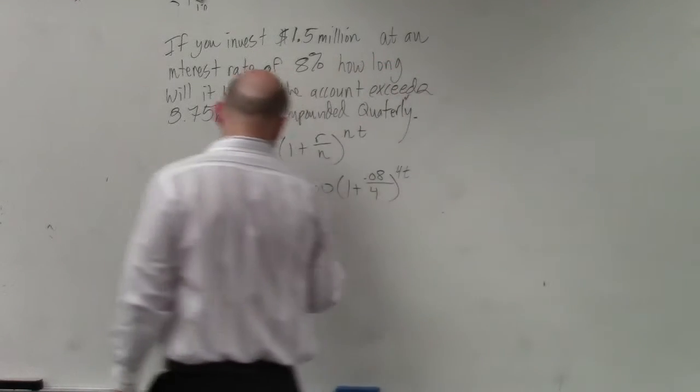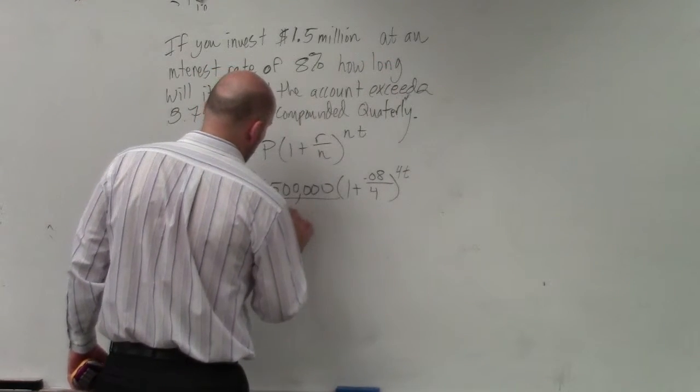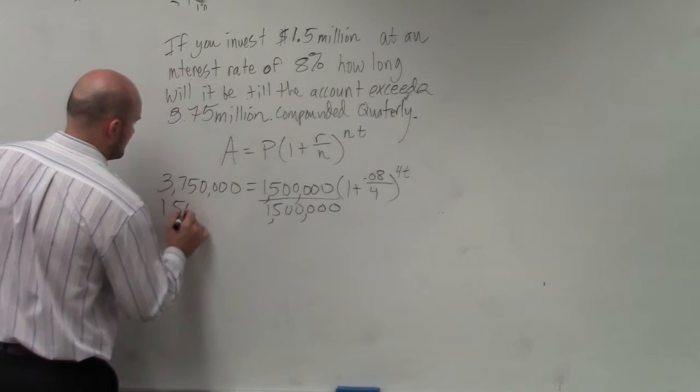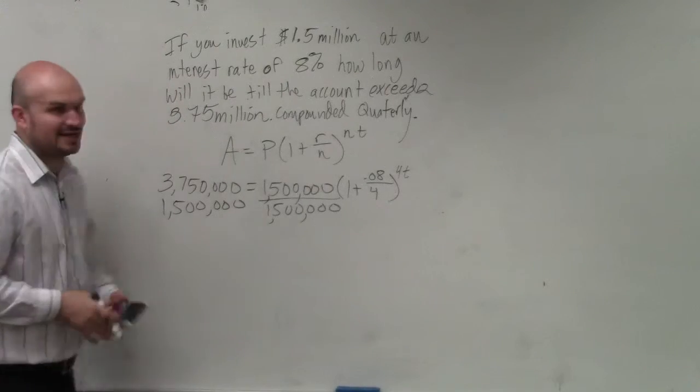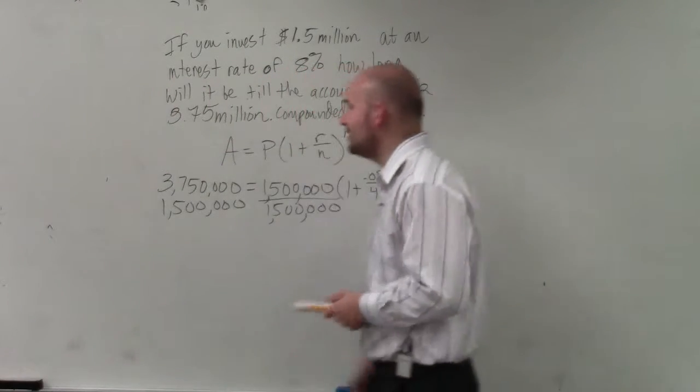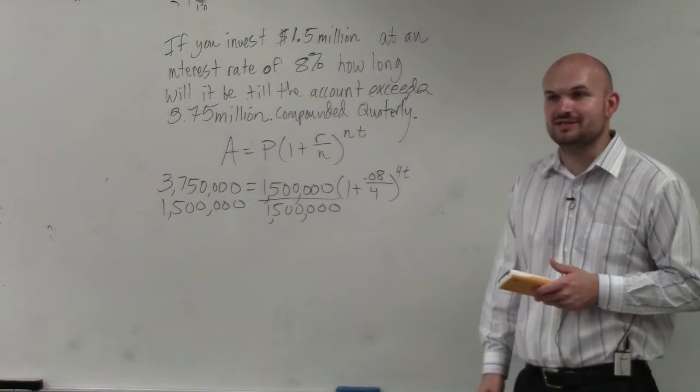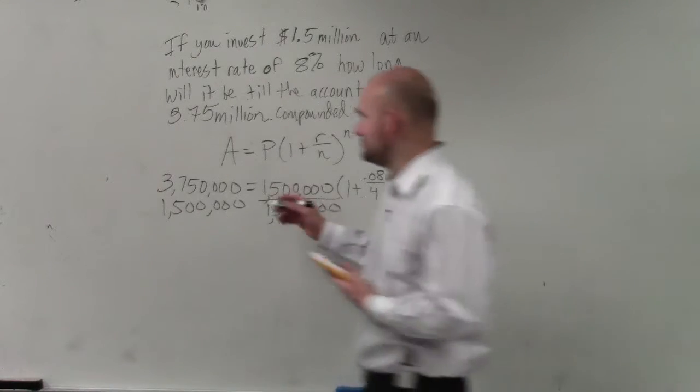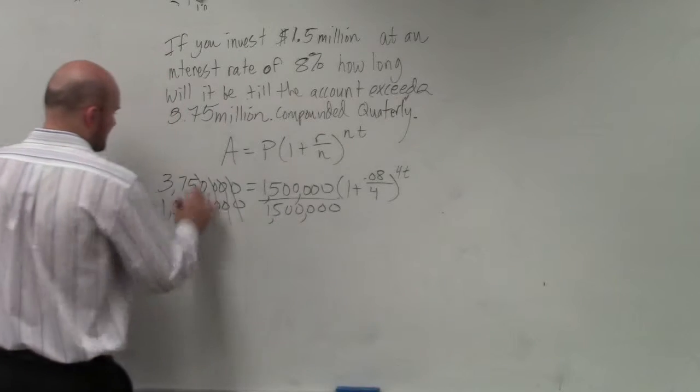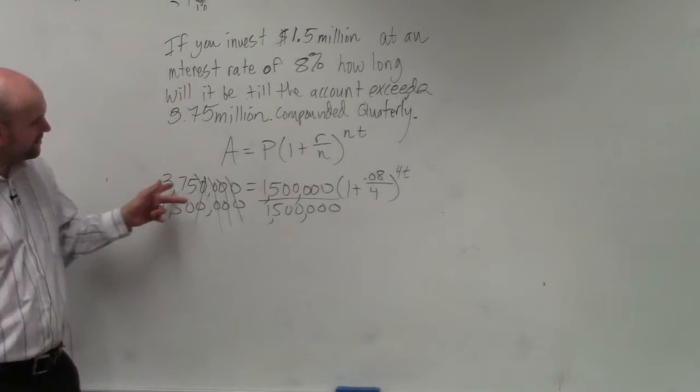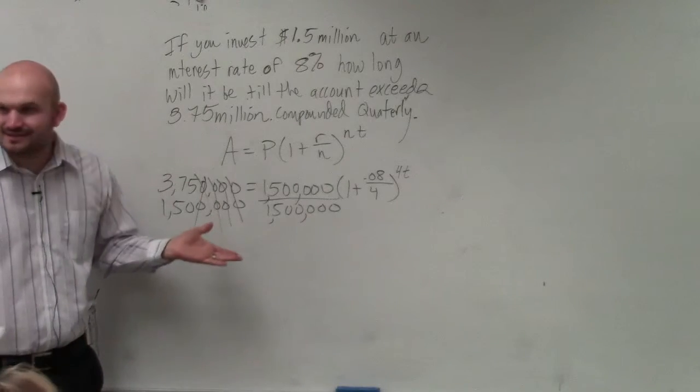So first thing I'm going to do is I'm going to divide by 1.5 million to isolate my variable. Now, is 3,750,000 divided by 1,500,000, is that ratio going to be the same thing as 3.75 divided by 1.5? Yes, it is.